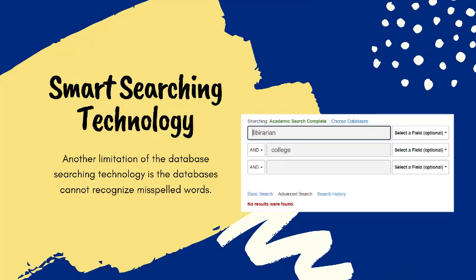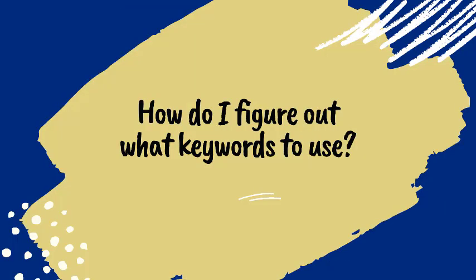The lack of smart searching in the databases also shows up in what keywords you type into a search field. For example, if I were to misspell a word while searching, the database will try to find that word the exact way I misspelled it and would probably not get any search results.